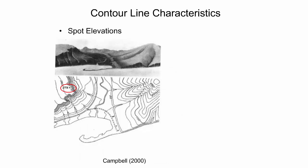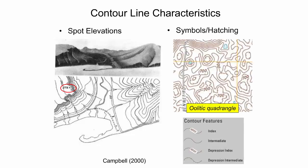Spot elevations are a method for providing additional detail on topographic maps. The X circled in the left image denotes a spot elevation of 275 feet. Most topographic maps use shading or hatching to denote a depression, which helps quickly differentiate a depression from a hill. The US Topo map series uses hatched contours, as shown in the gray legend on the bottom right. The image on the top right of Ulytic, Indiana exhibits a multitude of depressions as indicated by the hatched contours.